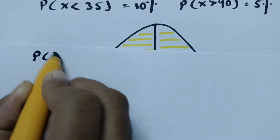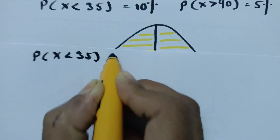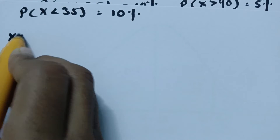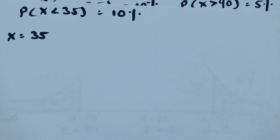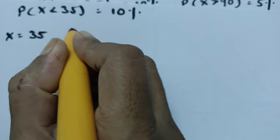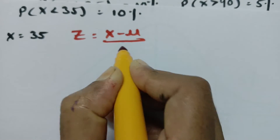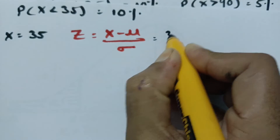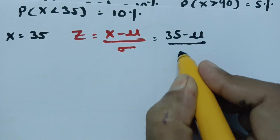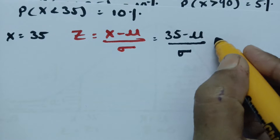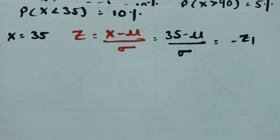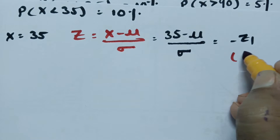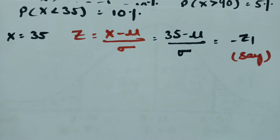When x is less than 35, it is given as 10%. So when x equals 35, the standard normal variate is z equals x minus mu by sigma. Here x is 35, mu is to be found, and sigma is to be found. Since it is towards the left side of the ordinate, this is the negative part, and I am writing this as minus z1.